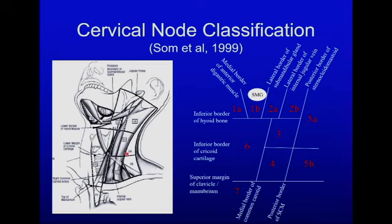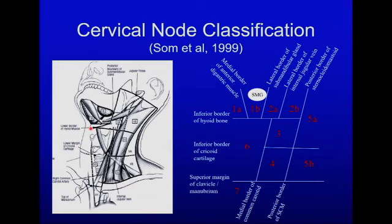If you are behind the posterior border of the sternocleidomastoid muscle, you are in level five or the posterior triangle, which extends all the way back to the trapezius muscle. If you are anterior to this line, you are in the other levels of the neck. Anterior to the posterior border of the sternocleidomastoid, the next key landmark is the inferior aspect of the hyoid bone, also visible with ultrasound. If your lesion is above this level, you are in level one or level two.